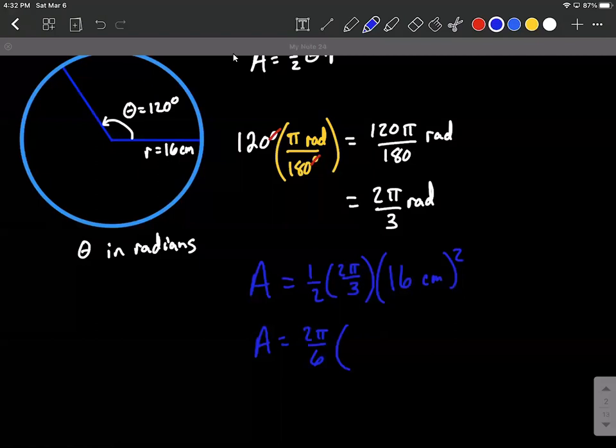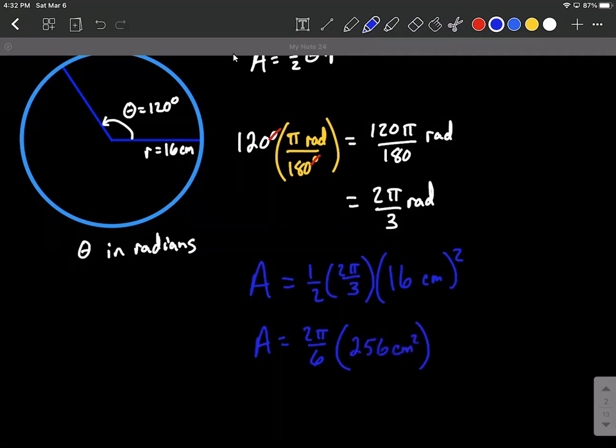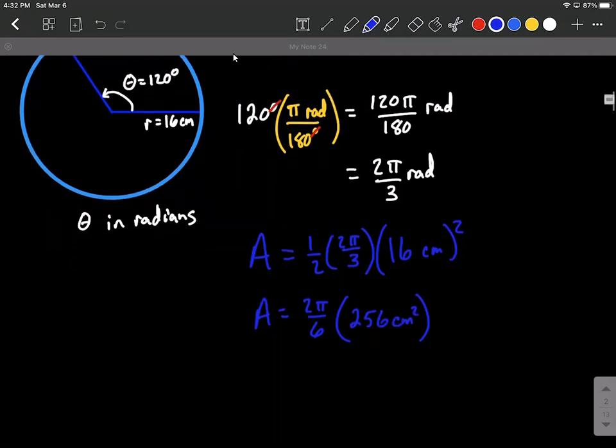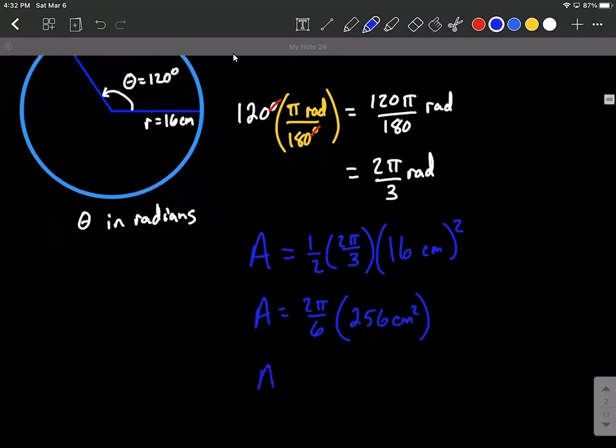And then we could also think of this as two copies of 16 centimeters times 16 centimeters, which is going to give us 256 centimeters squared. Maybe a little bit more reducing down here, we can go ahead and say 2 pi over 6 is the same thing as pi over 3, times 256 centimeters squared.